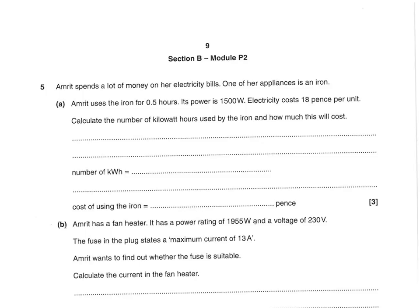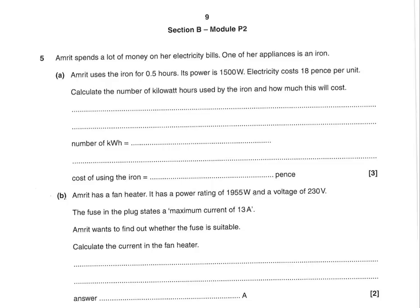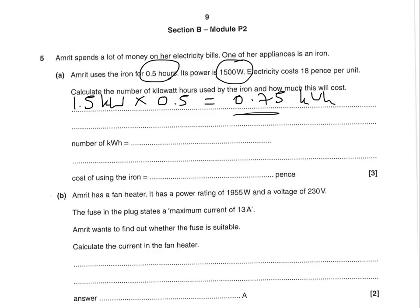Amrit spends a lot of money on her electricity bills. One of her appliances is an iron. Amrit uses the iron for 0.5 hours and its power is 1,500 watts. Electricity costs 18 pence per unit. Calculate the number of kilowatt hours used by the iron and how much this will cost. Convert 1,500 watts to 1.5 kilowatts, then multiply by 0.5 hours to get 0.75 kilowatt hours. Each unit costs 18 pence, so 18 times 0.75 equals 13.5 pence. That gives you all three marks — two for the kilowatt hours and one for the cost.